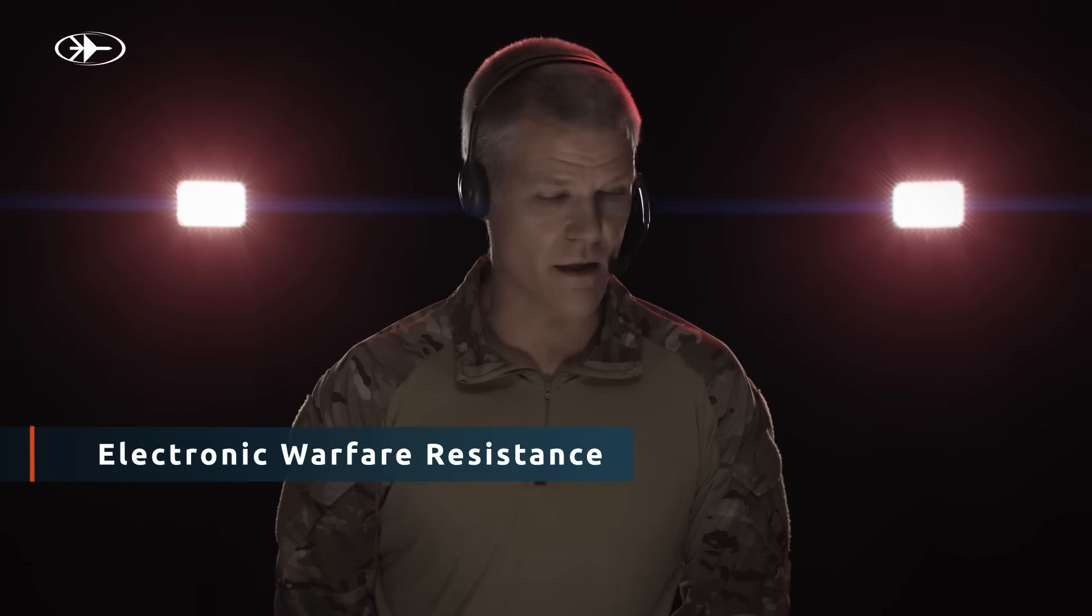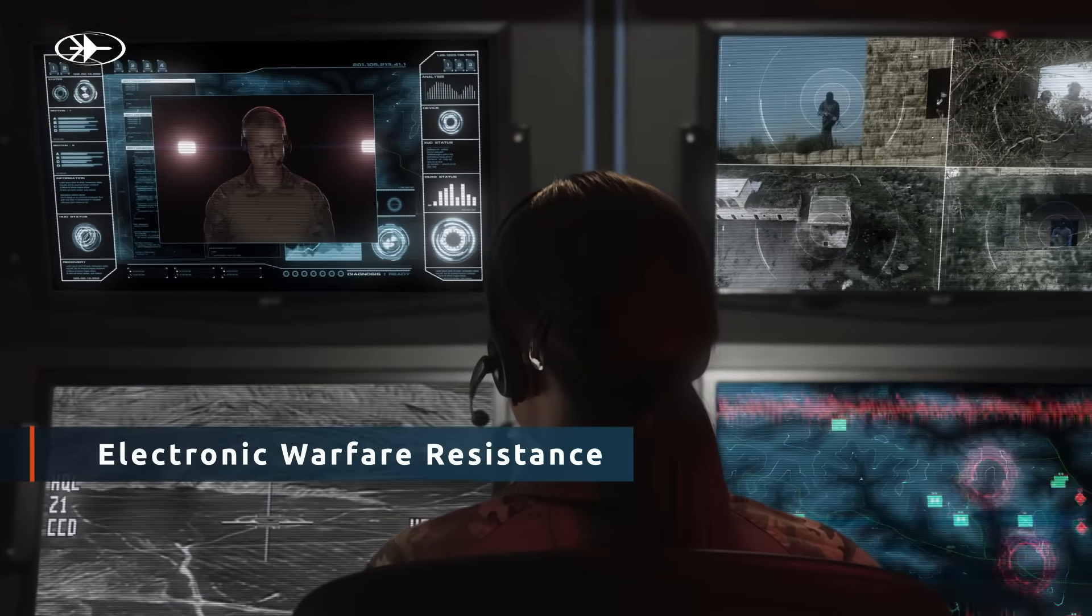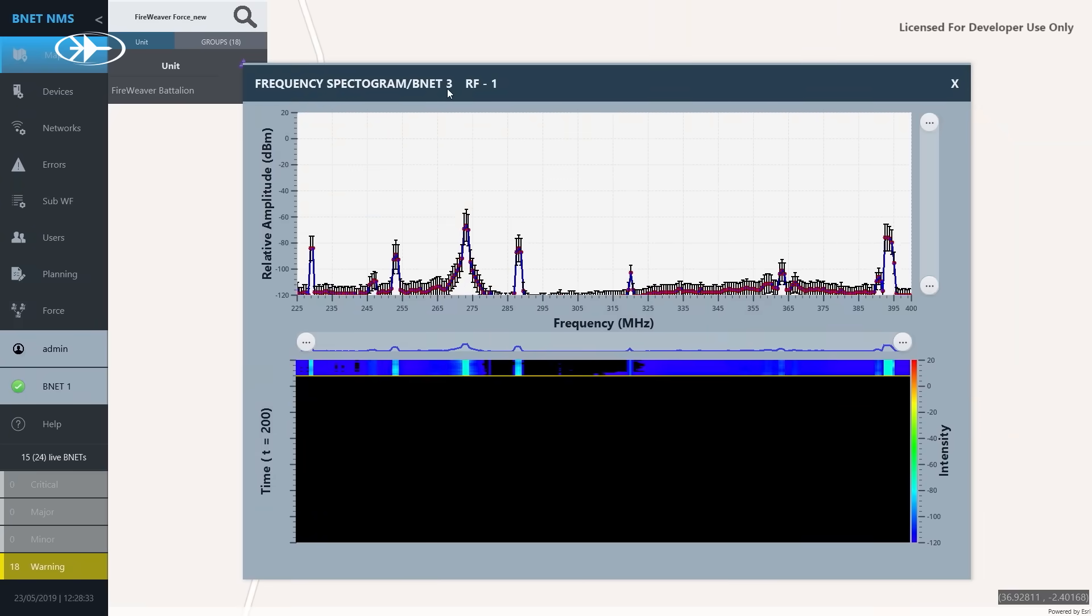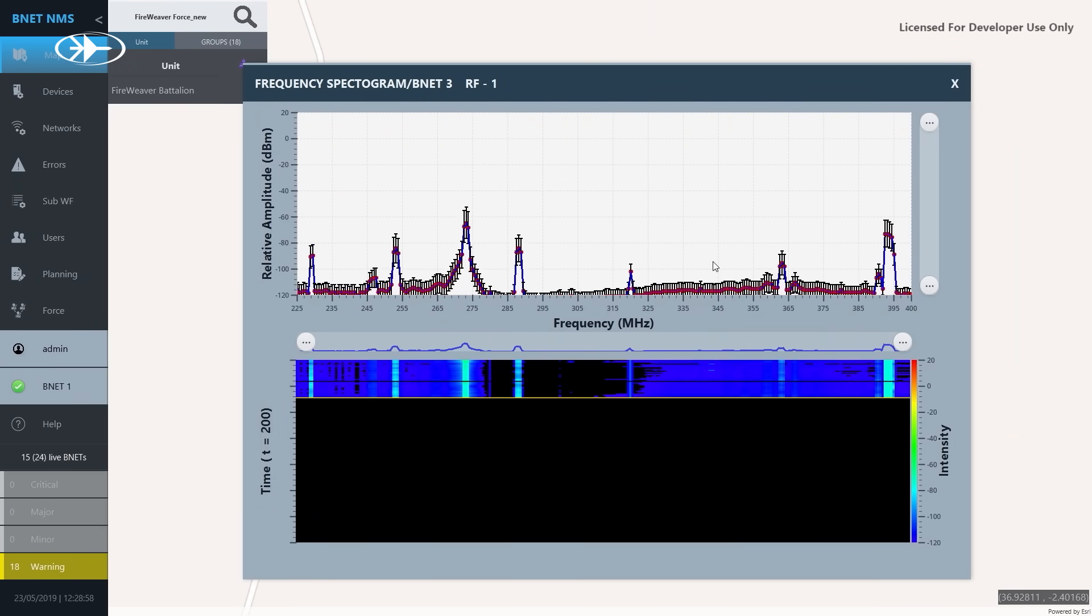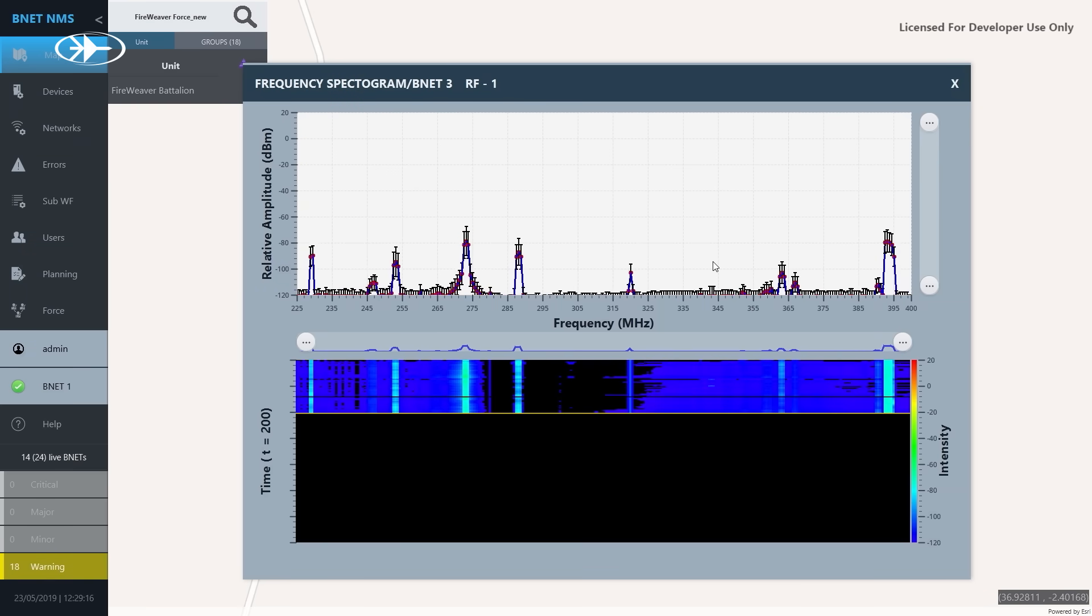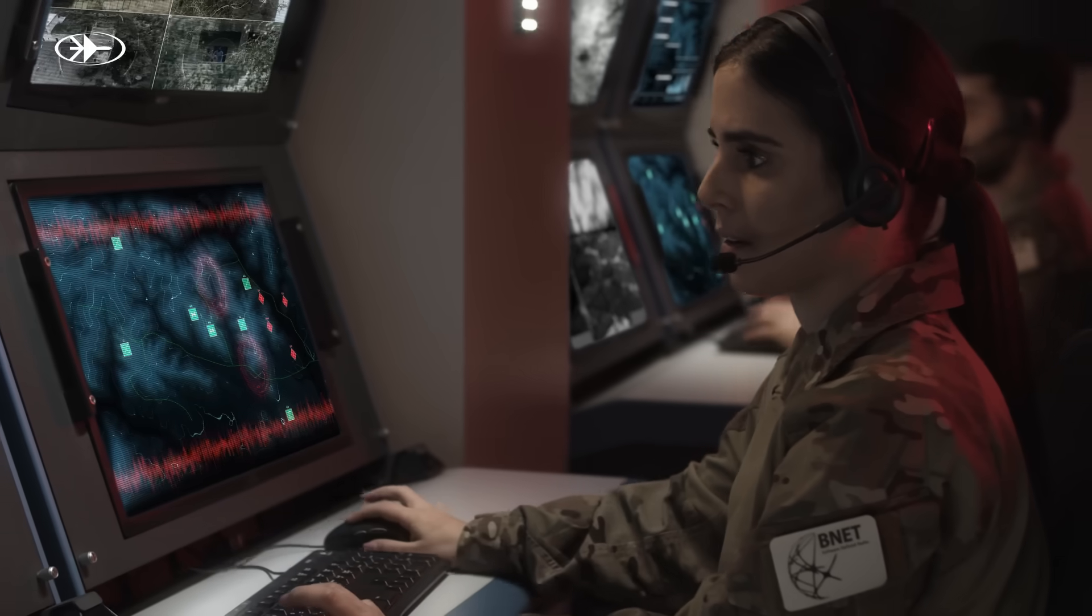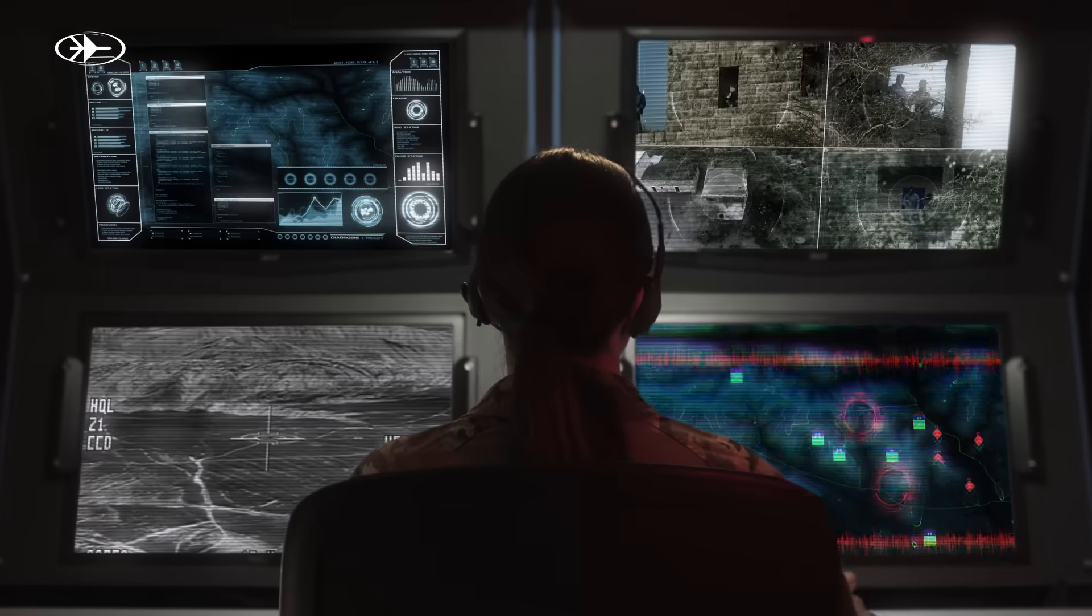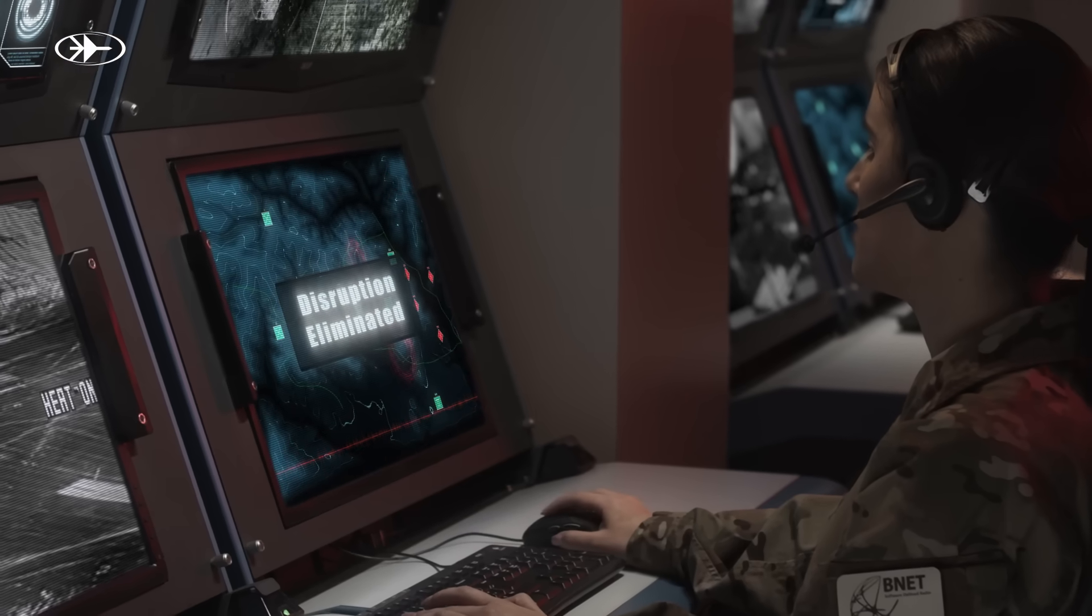They've tried to jam our signal. Don't worry, sir. B-Net already handled it automatically. The ability to distribute communication over a large range of frequencies makes the B-Net network immune to radio jamming devices, making our mission fail-proof.